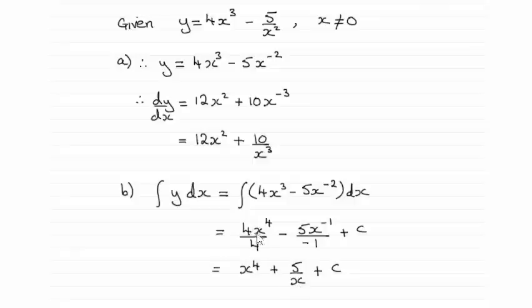On the first term here, the 4's cancel, just leaving you with x to the power 4. OK, so I hope that's helped, if there were any problems.